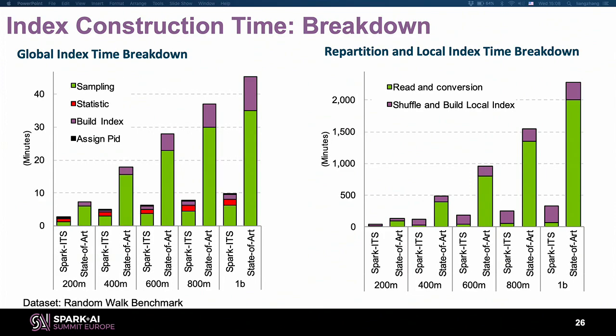The assign partition ID step takes just two seconds for all datasets. The baseline uses an access binary tree requiring more time. For the local index, the baseline spends significant time on reading and conversion, whereas our system reads the data but does not spend time on conversion because we use the special signature. The shuffle and build local index steps have fixed overhead for reading and shuffling.